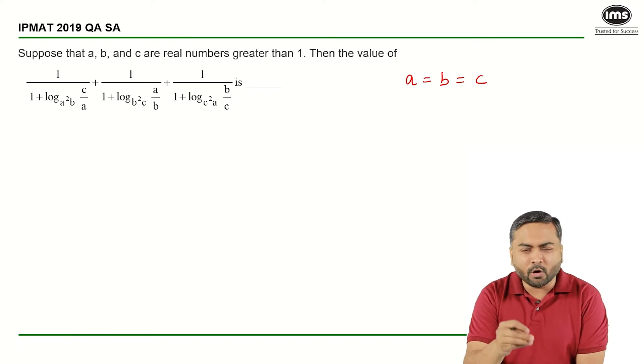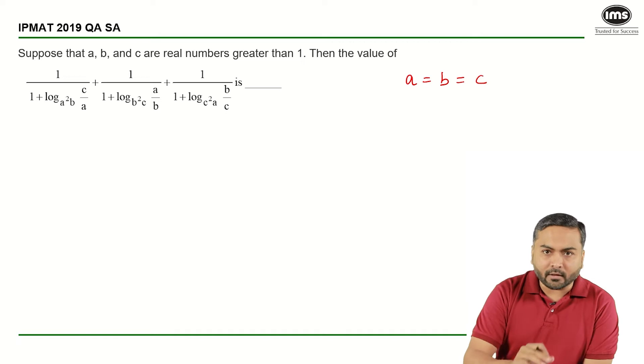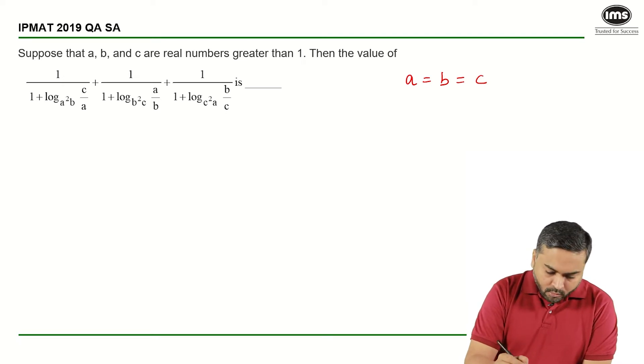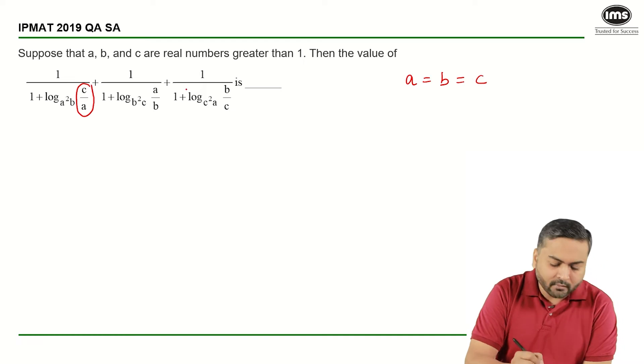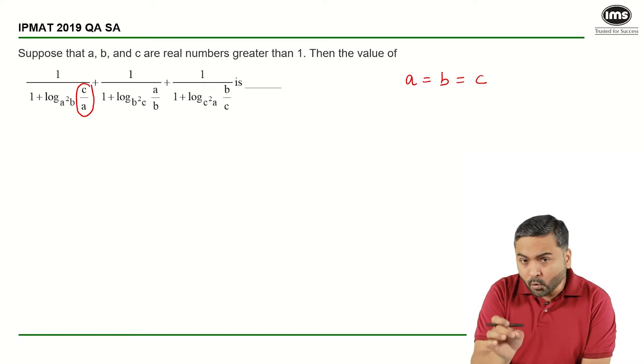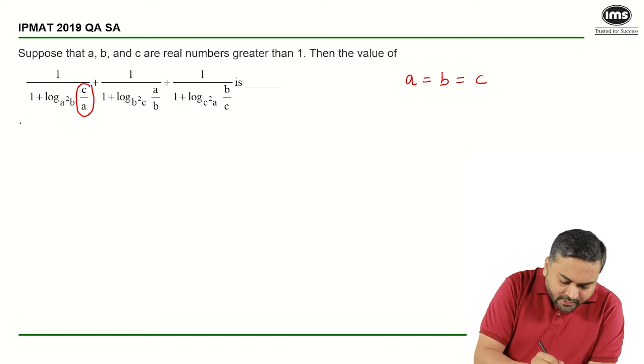Let us say that is equal to 2 or 3 or 2.5, it could be anything. So I can see that this value will become 1, so log of 1 to any base is always 0. So this expression, this term, this particular term will turn out to be 1.